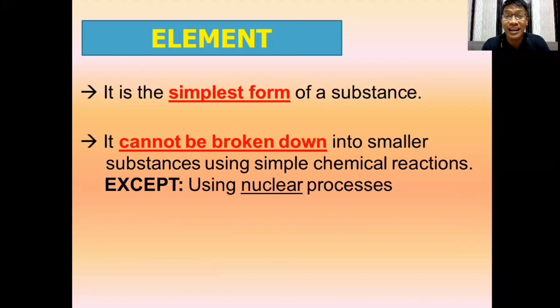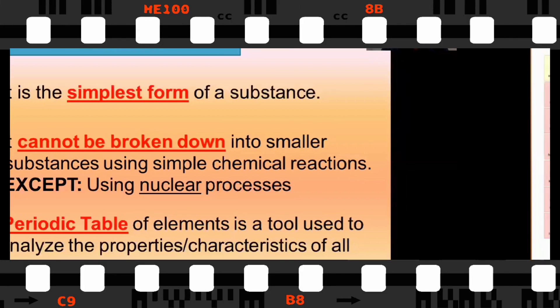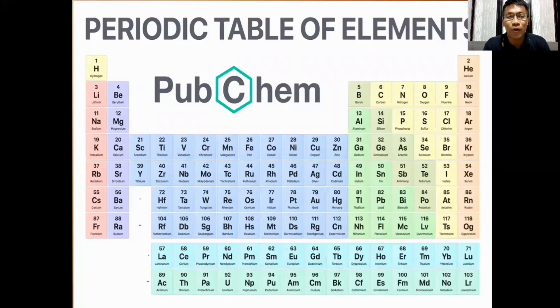For us to be aware of different elements that are existing around us, we use a tool. And this is the periodic table of elements. It is a tool that helps us to analyze the properties and characteristics of all the elements. With this, we can easily understand their behavior. And also, we could have an idea of the possible use of them. So far, we got 118 elements in the periodic table.